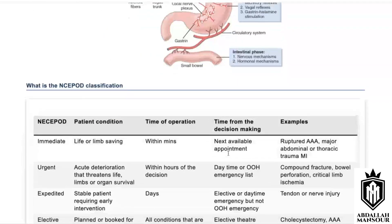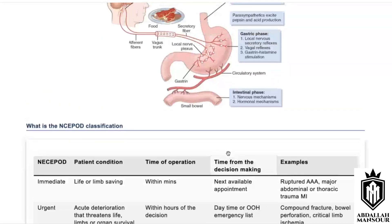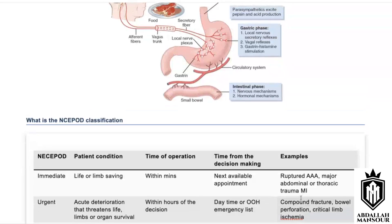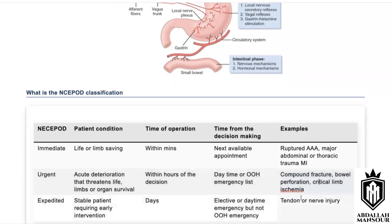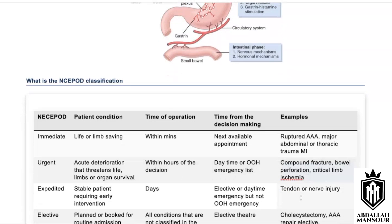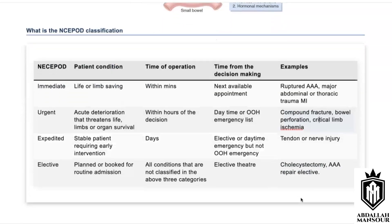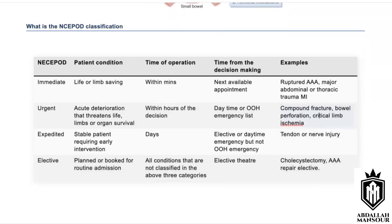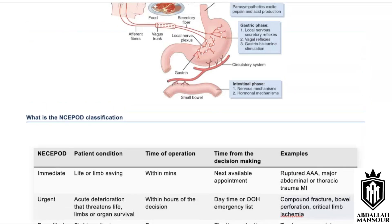Tendon and nerve injuries, compound fractures — these could arguably be Category 2, though critical limb ischemia should remain Category 1. CAT-3 covers expedited surgeries done at the next available list, such as tendon or nerve injury. CAT-4 covers elective surgeries, such as an unruptured AAA repair or any elective tumour operation.